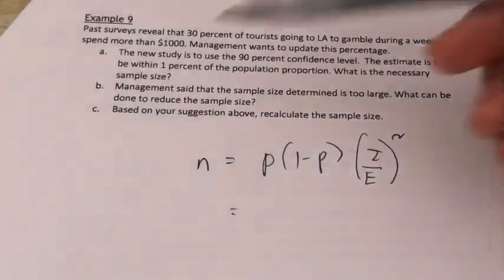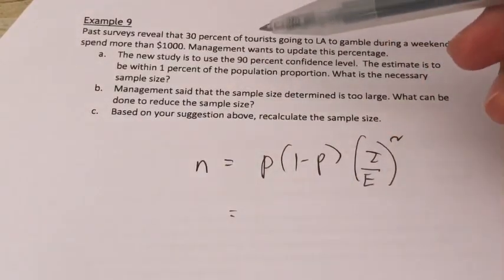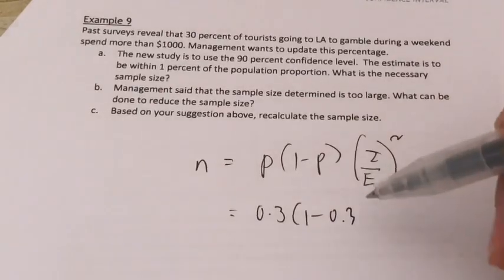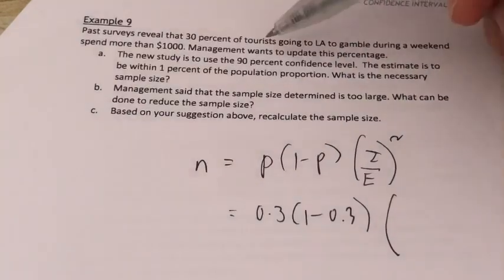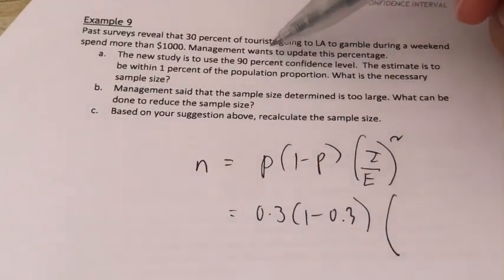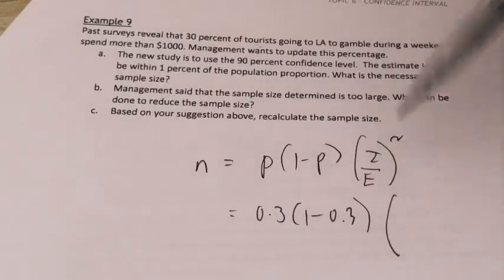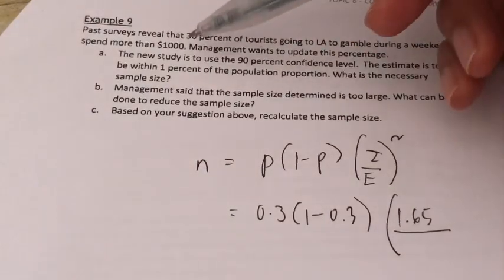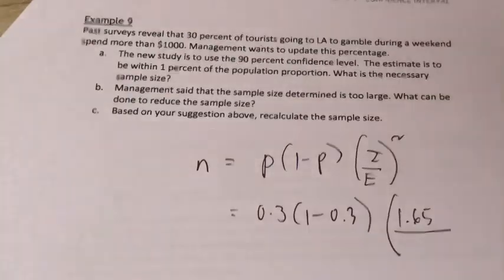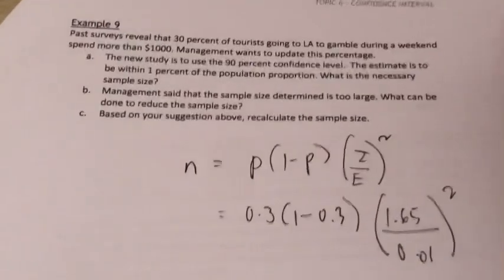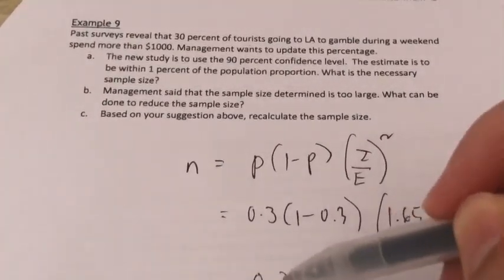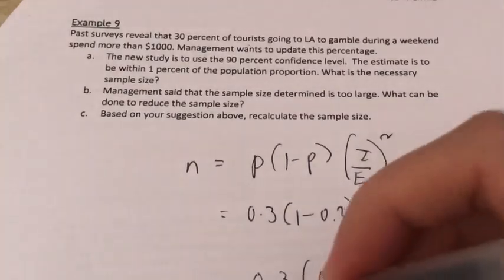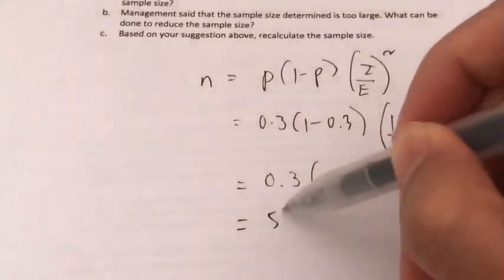From the information given, past surveys reveal 30%, so this is our P — 0.3. So it's 0.3 times (1 minus 0.3). The Z for 90% confidence level is 1.65. E is given as 1%, which is 0.01. So n equals 0.3 times 0.7 times (1.65 over 0.01) squared. That gives us 0.3 times 0.7 times 27,225, which equals 5,717.25.